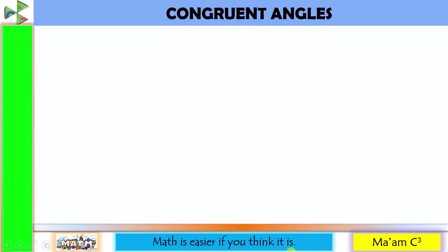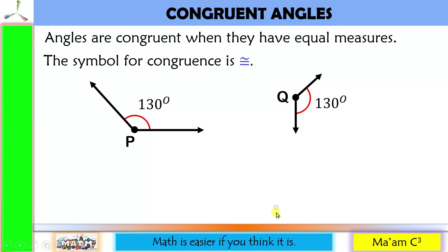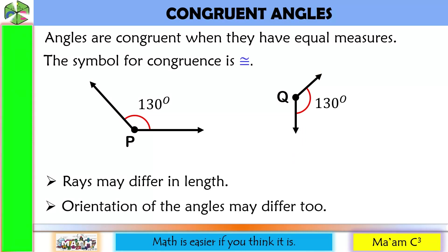Let's have the first one: congruent angles. Angles are congruent when they have equal measures. The symbol for congruence is this. I have here two angles — both of them measure 130 degrees. You will notice that the lengths of the rays are different, and the orientation of the angles may differ too. The different positions of the angle have no effect on their measures. For as long as the measures are equal, then they are congruent.